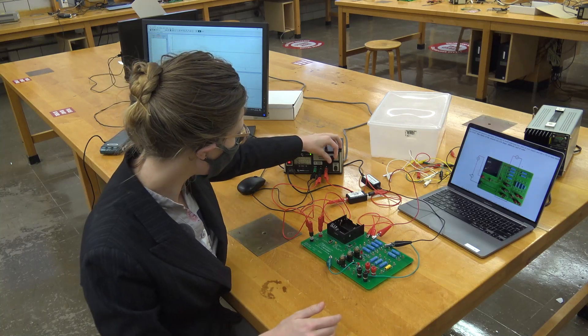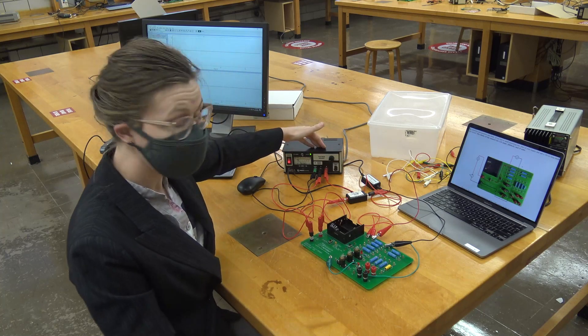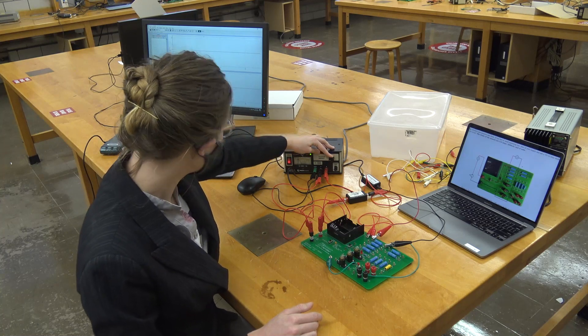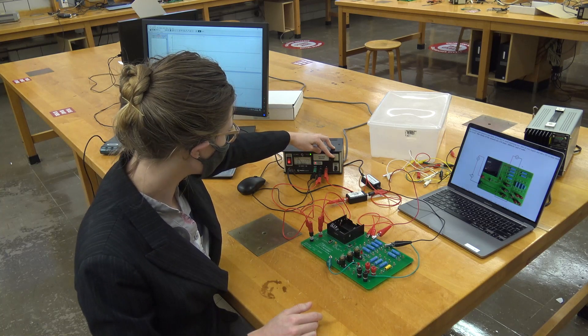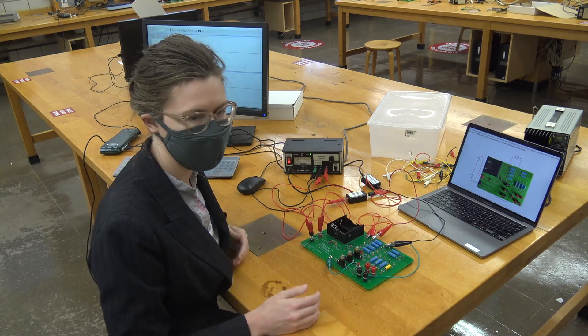When you use your power supply, try to never keep it too high for too long. You want to turn it off between measurements. You only want to go up to 4 volts. And once you're over 3 volts, you want to be careful to not leave it up there too long.